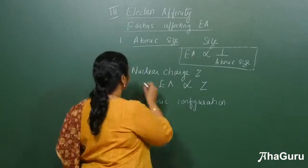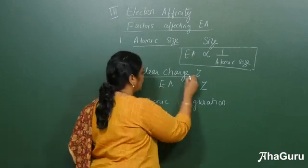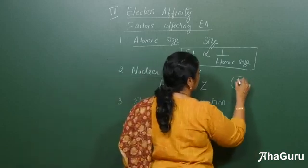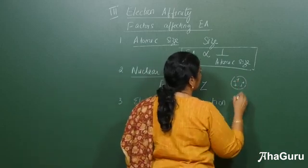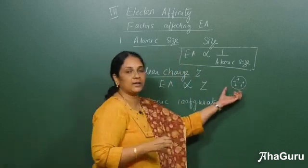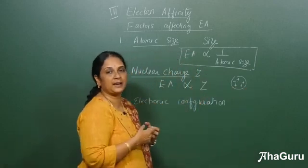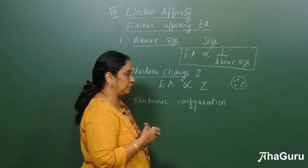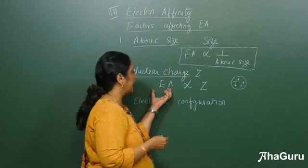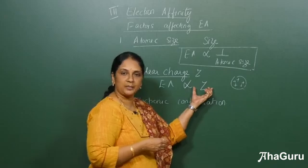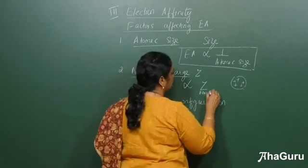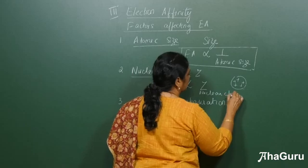The next factor is nuclear charge. When the number of protons is greater, electrons can be more easily taken up by the atom. Therefore, electron affinity is directly proportional to the atomic number, or nuclear charge.